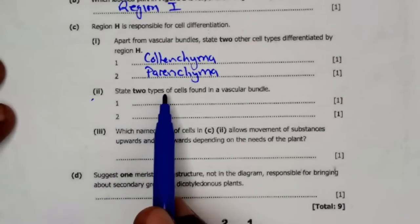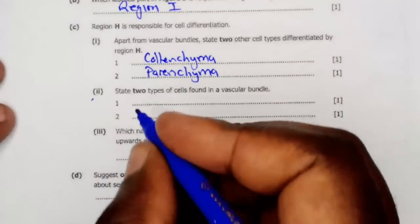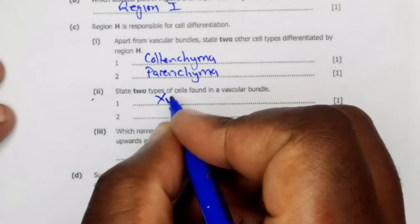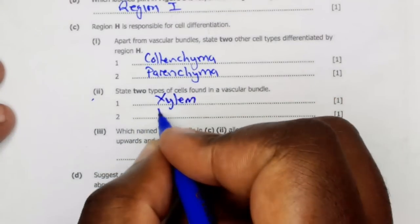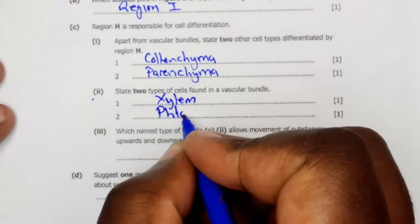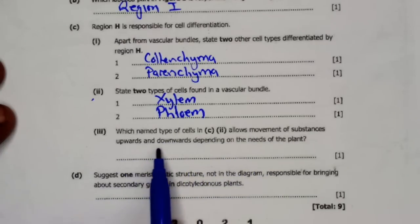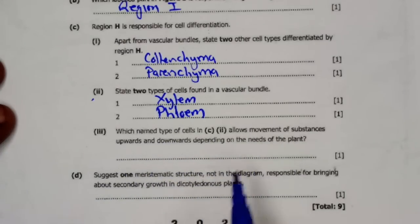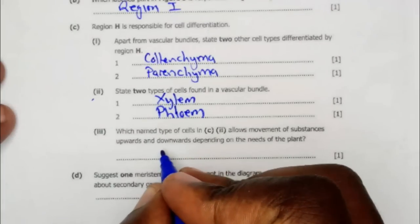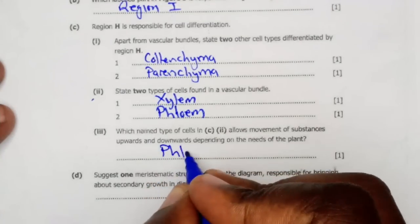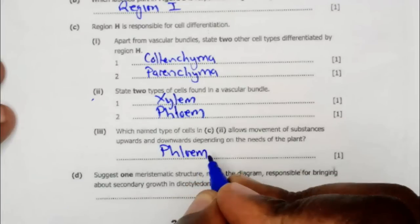C2: State two types of cells found in the vascular bundle. The vascular bundle contains phloem and xylem. C3: Which named type of cells in C2 allows movement of substances up and down depending on the needs of plant? The phloem vessel can transport substances up and down depending on the needs of the plant, except the xylem which only transports sap upwards.